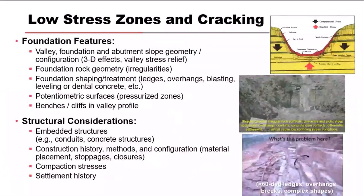In a rock foundation we might have unfavorable foundation abutment slope geometry — really steep slopes, breaks in slopes, foundation rock irregularities, large steps in the foundation. Looking at construction photos, if you see steep faces and ledges, usually around 55–60 degrees or steeper, you can get low stress and cracking across those features. You can get tension exploited with hydrofracture or erosion along the foundation, and high potentiometric surfaces along a fault or crack transferred from the dam.